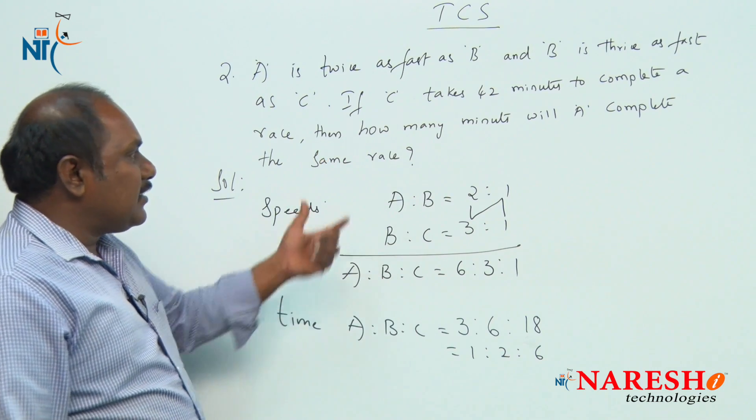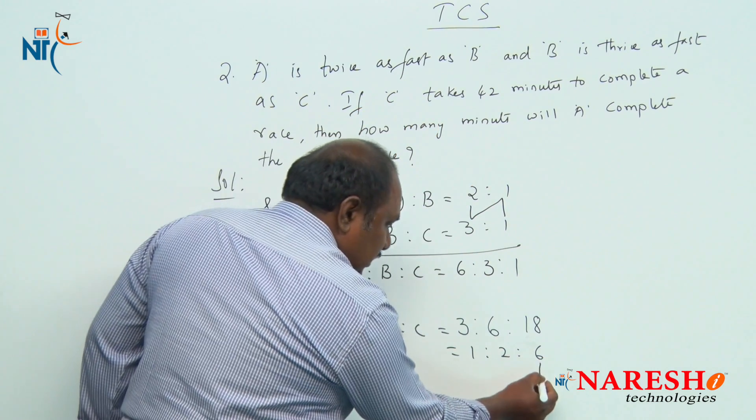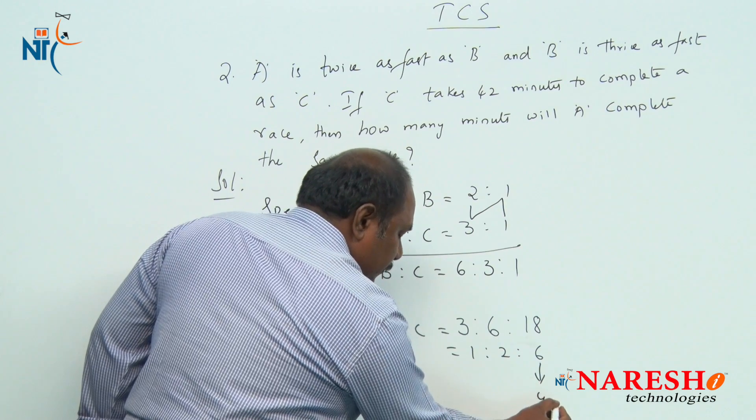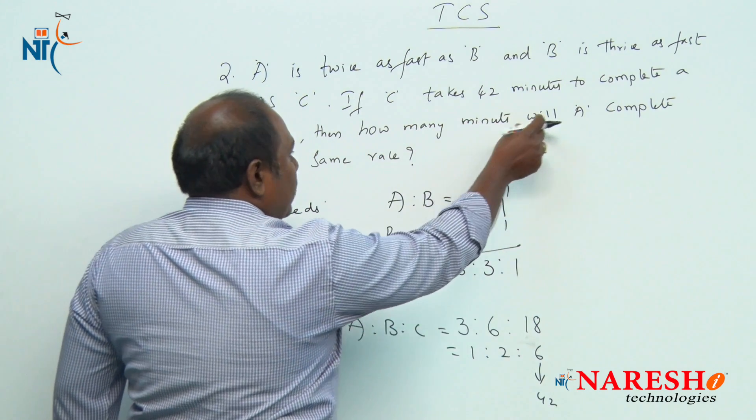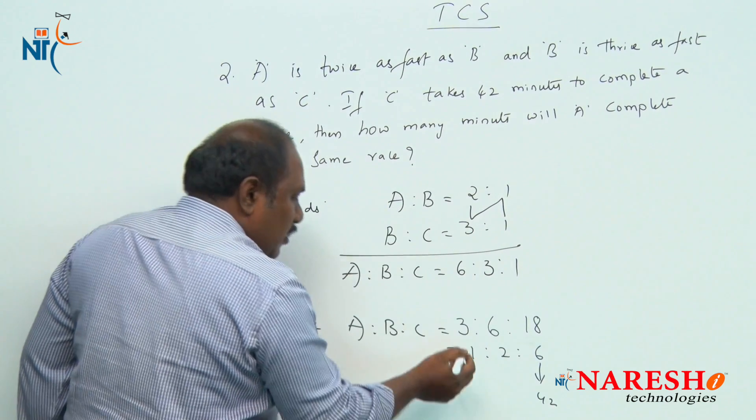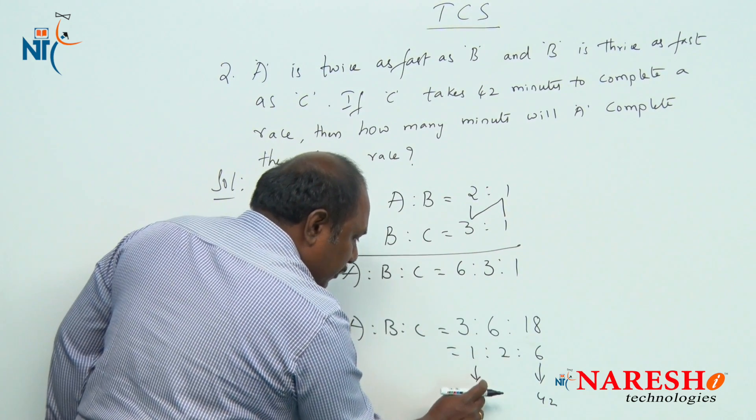But in the question it is given C takes 42 minutes to complete the race. So this 6 parts is 42. And the question asked is, in how many minutes will A complete the same race? 1 part. If 6 parts is 42, 1 part should be 7.